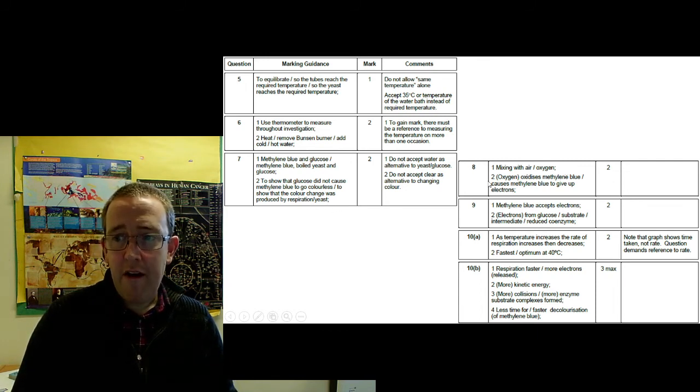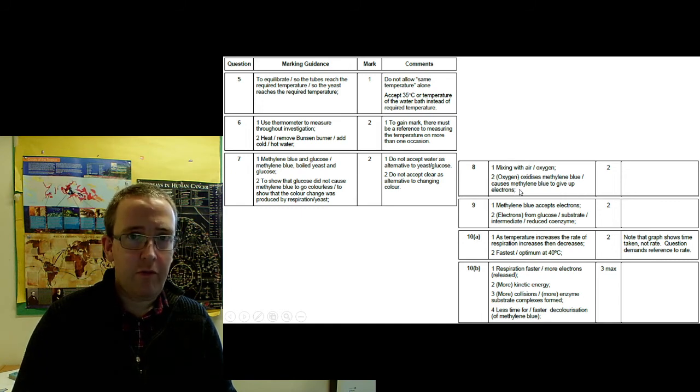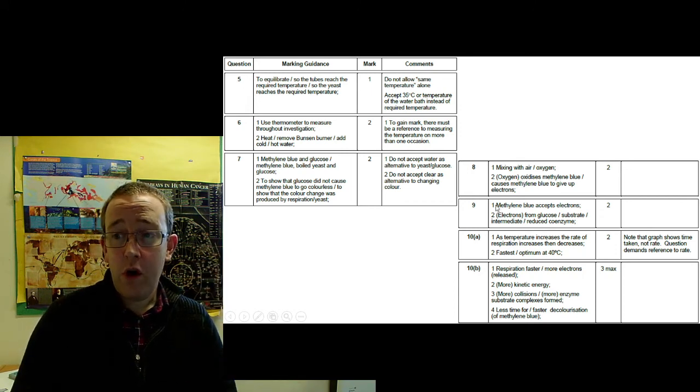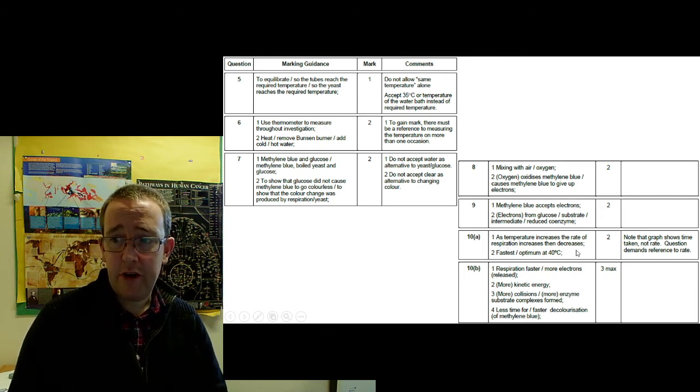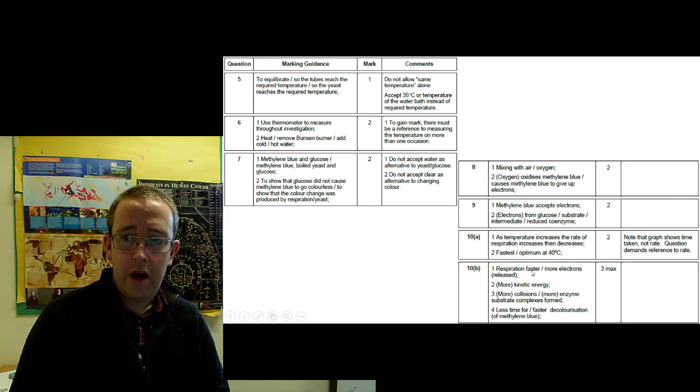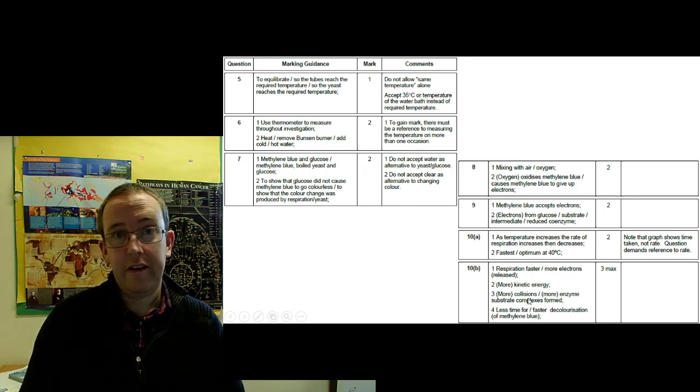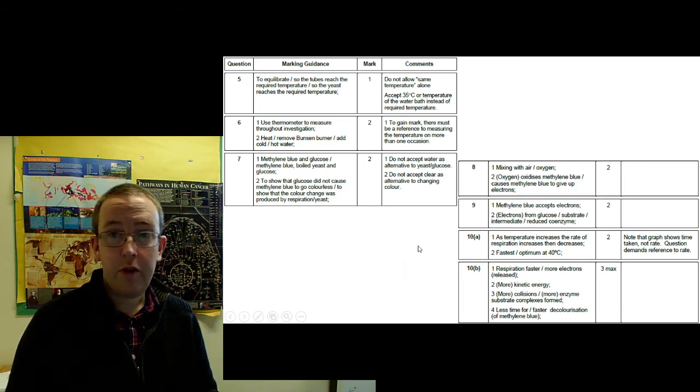So, mixing with the air and oxygen is number eight. Oxygen oxidises methylene blue and causes the methyl blue to give up electrons. So that's basically a little bit about the interface, the idea that methyl blue will go back to being blue. So, how does it work? Methylene blue accepts electrons. They come from glucose, from the substrate of the intermediate, or a reduced coenzyme. There's a number of answers you can have there. I would accept NADH, FADH as that answer as well. So, number ten. As temperature increases, the rate of respiration increases, then decreases. So at this point, we're now explaining what happens in terms of graphs. The fastest are oxygen up 40%, 40 degrees C. So, 10b, respiration is faster, more electrons are released, more kinetic energy. It's the standard kinetic energy and temperature answer. More collisions or substrate complexes formed, less time for faster decolourisation of methyl blue. So, that's up to 10b.